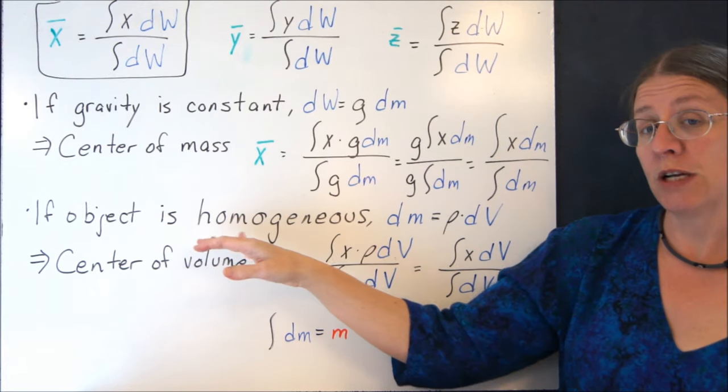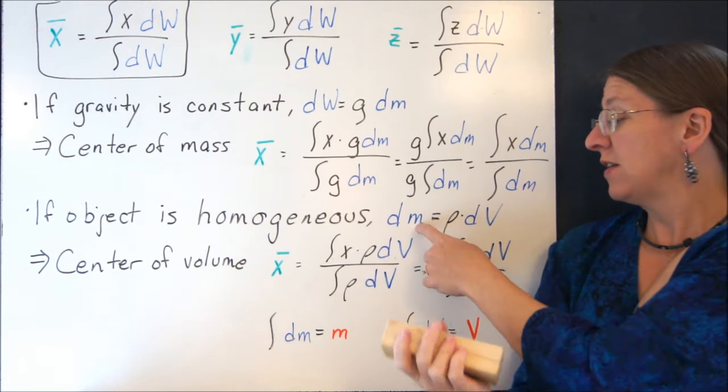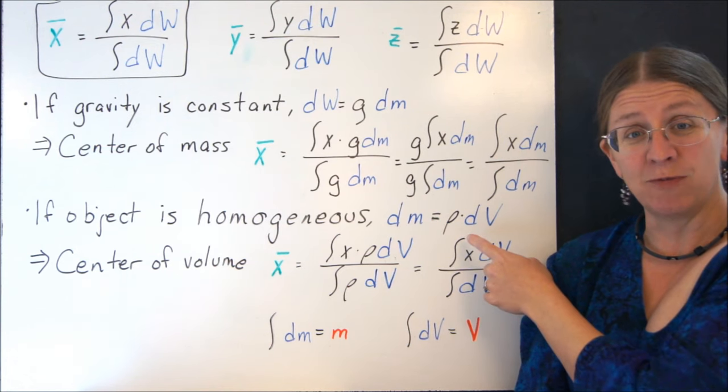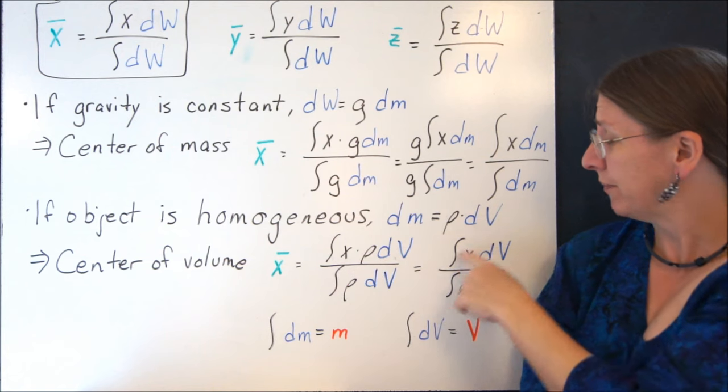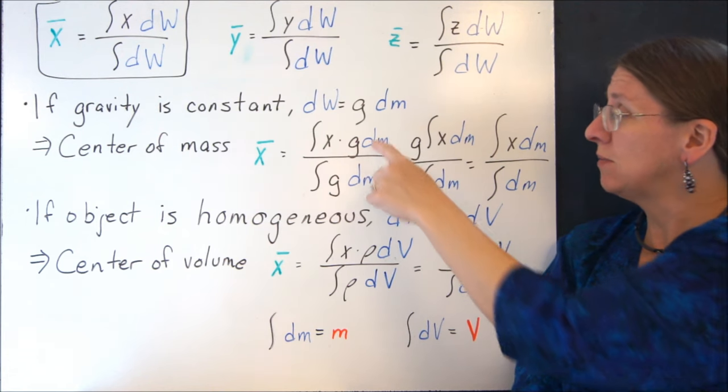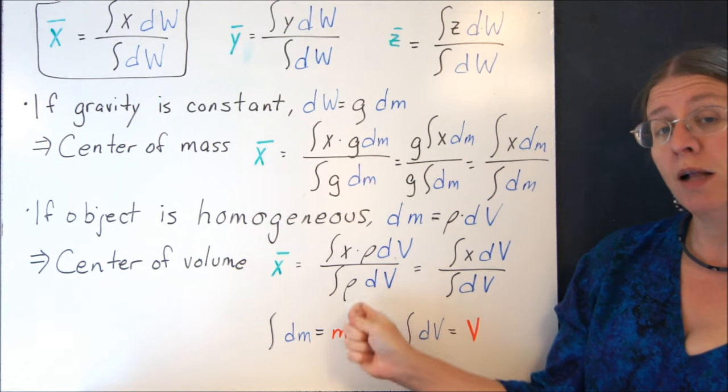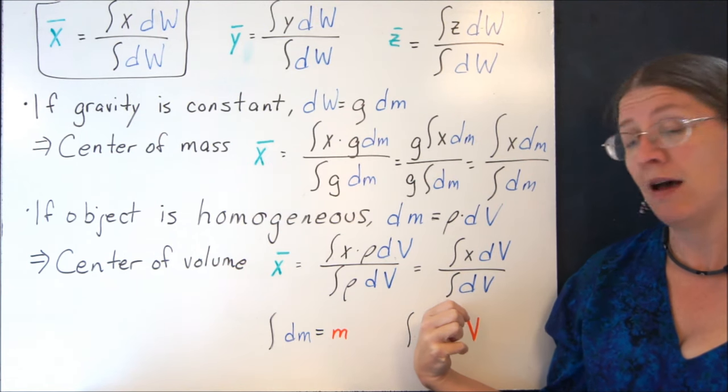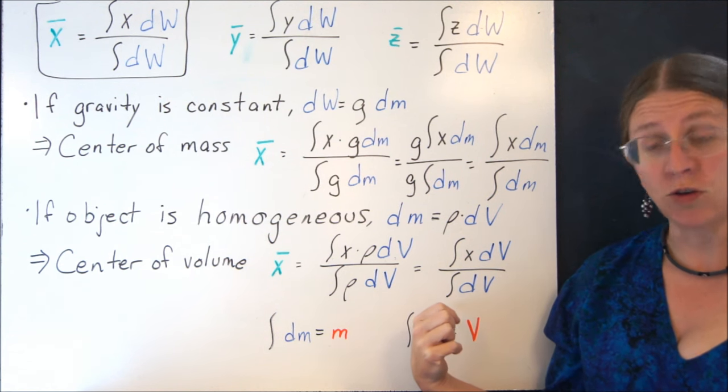If my object is homogeneous, the wood is the same all the way through, then the differential mass is some density of my object times the volume. Same thing, plug it in. This goes in where the dm's are in this formula. But my rho's are constant and I can pull them out and cancel them and I have a very similar looking formula for volume.